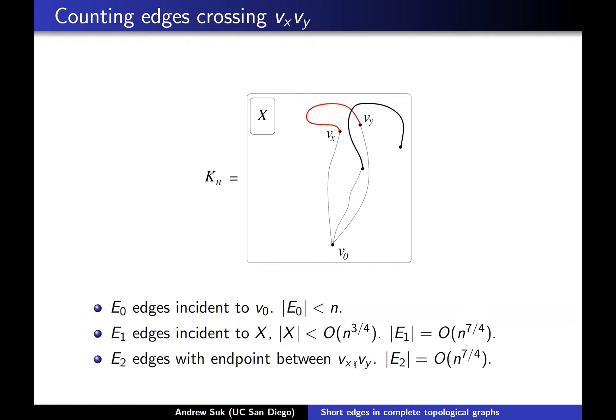Then there are edges with an endpoint between V_x and V_y in that radial ordering. This is where I use the fact that the distance between V_x and V_y is small, so there's not that many vertices between V_x and V_y. Even if all of these edges cross the red edge, there's not that many of them, so that's also not something to worry about.